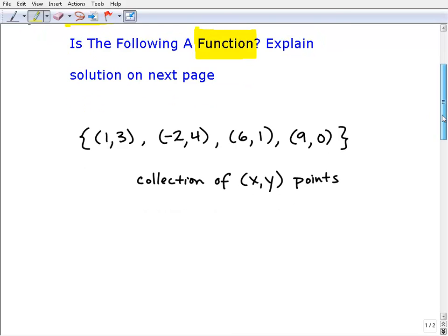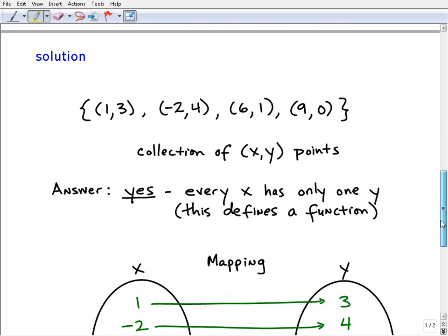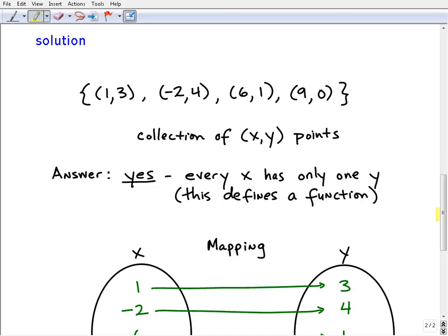So we're talking about functions and relations. A function is a specific type of relation, and a relation in mathematics is simply a collection of XY ordered pairs, XY points. You can think of it on the XY axis. If you just had a bunch of points plotted around and you put them all in a bucket, that collection would be a relation. And a function is a particular type of relation, a particular type of collection of points.